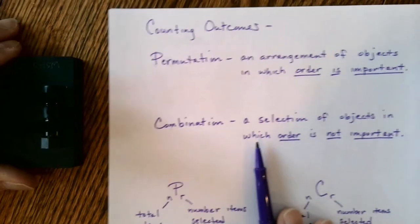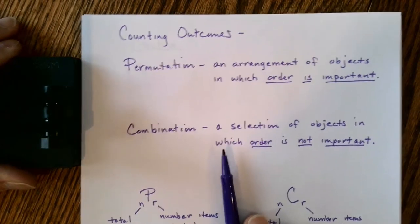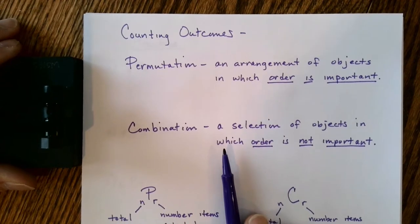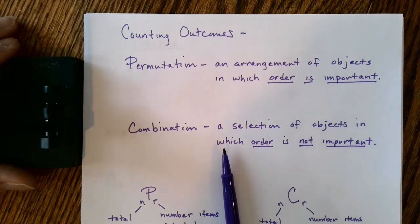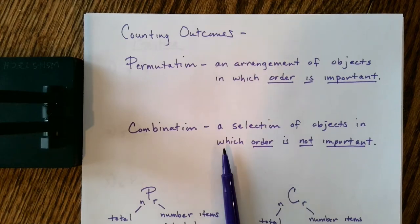Let's continue our discussion of counting outcomes. In the last video we discussed how to determine an outcome and how to determine how many possible outcomes we could have. In this video we're going to discuss other possible ways that outcomes can be determined, and we're going to introduce two new words: a permutation and a combination.